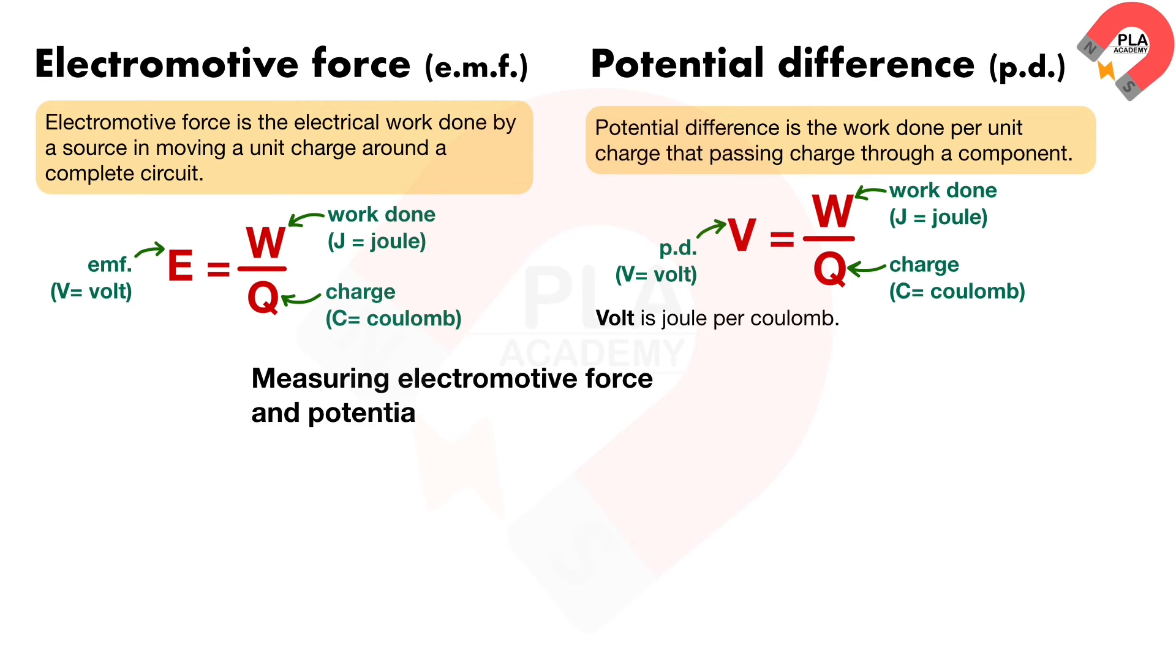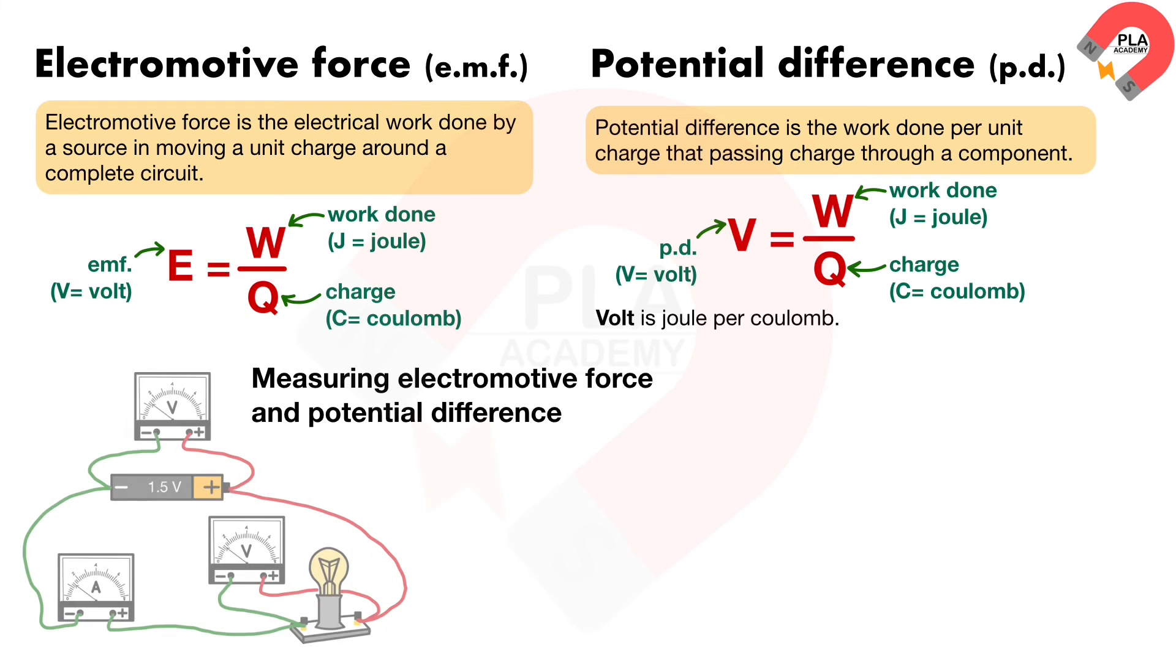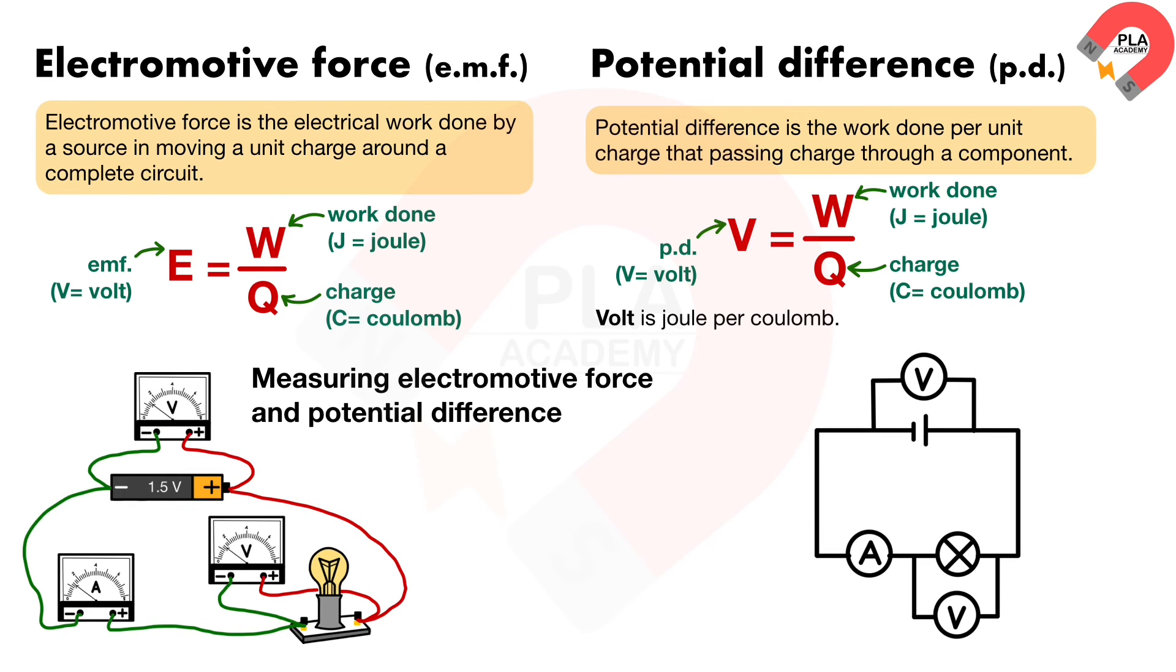Measuring electromotive force and potential difference: A simple circuit is shown on the diagram. This is a cell. Longest side is indicated a positive, shortest side is indicated a negative. This is a light bulb.